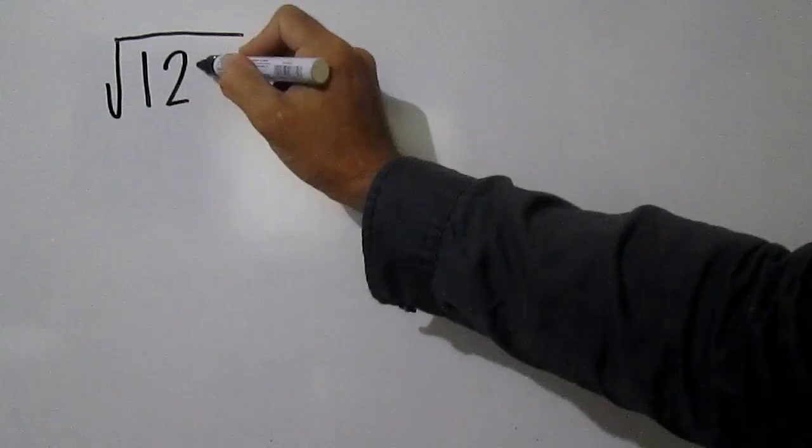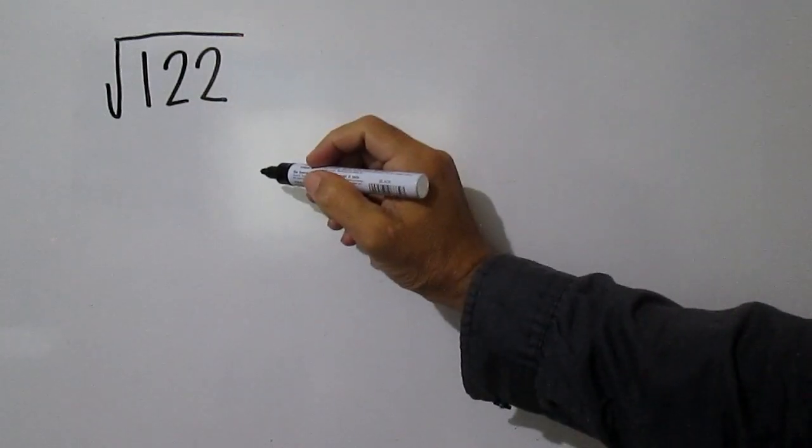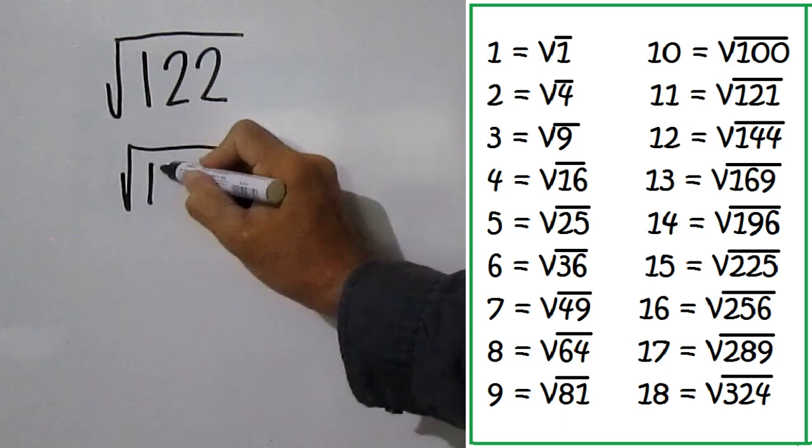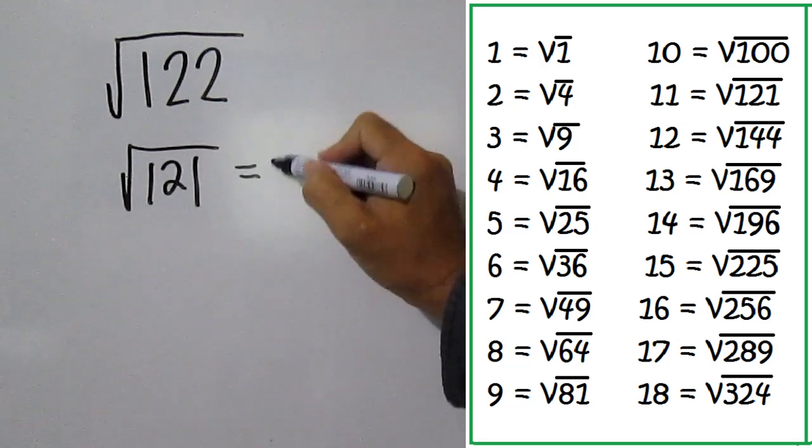Square root of 122. The closest perfect square less than 122 is 121, and the square root of 121 is 11.